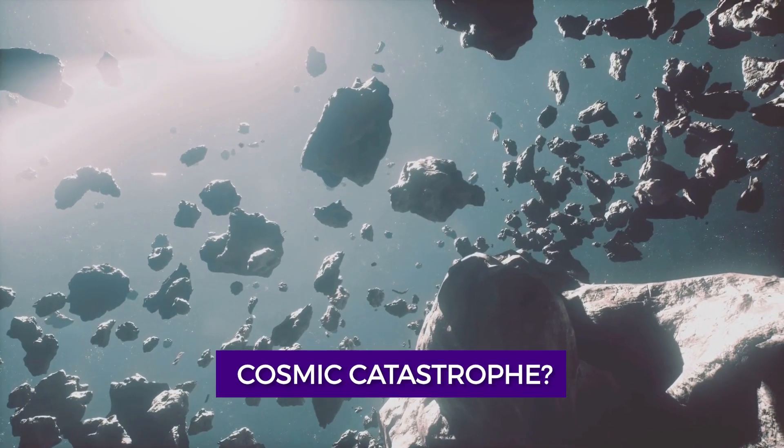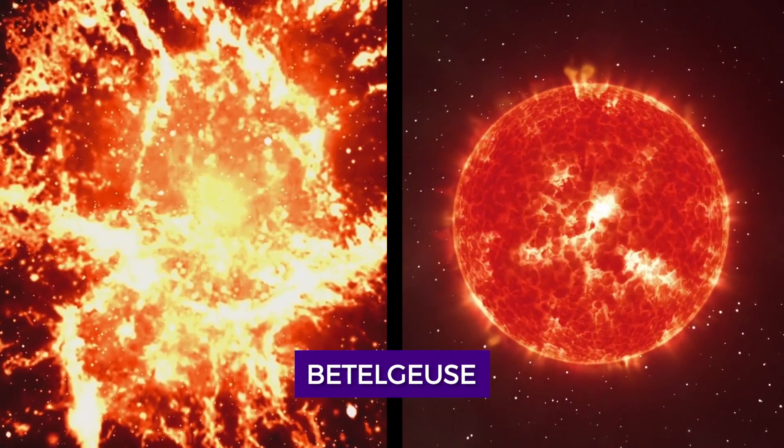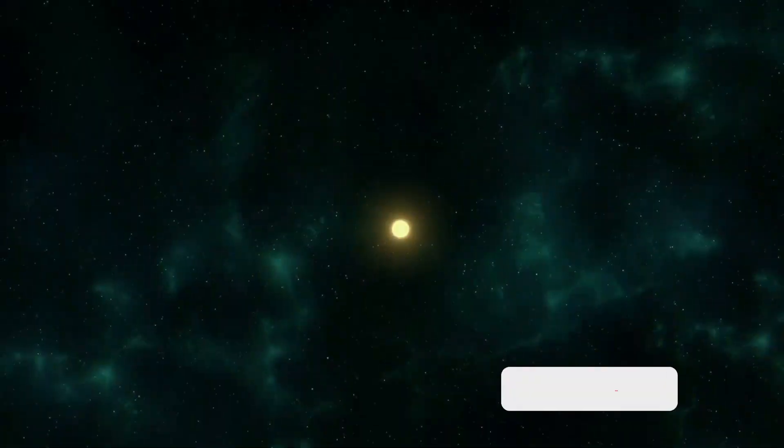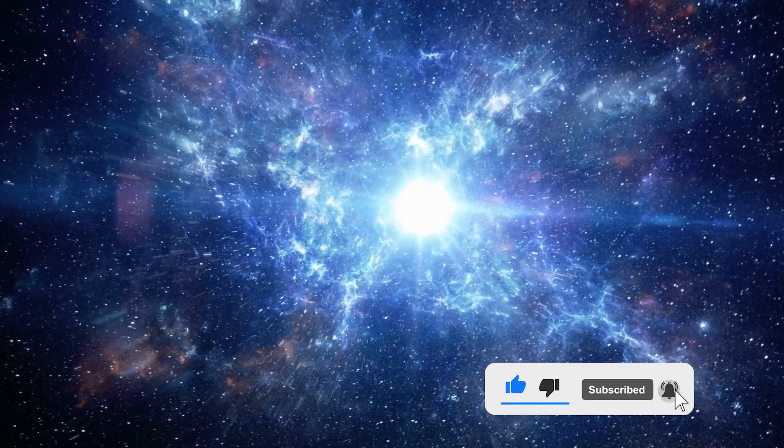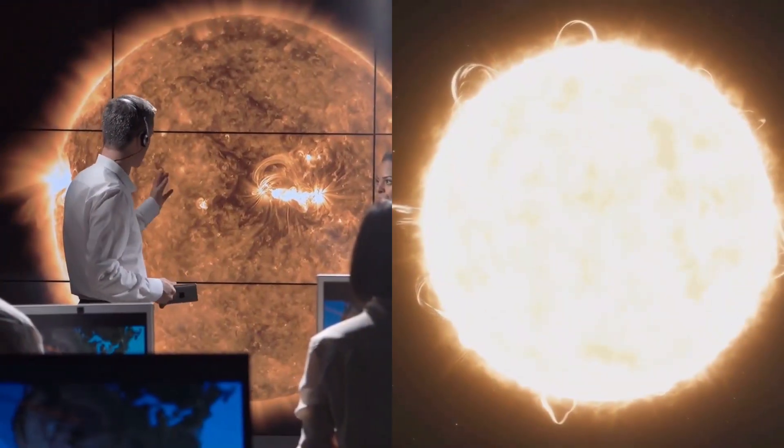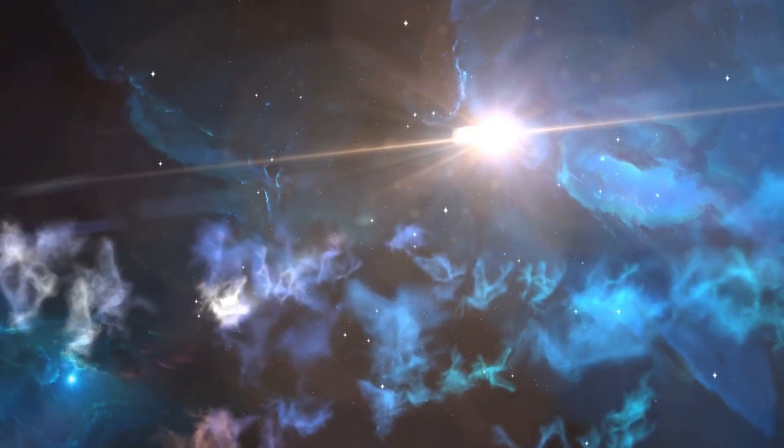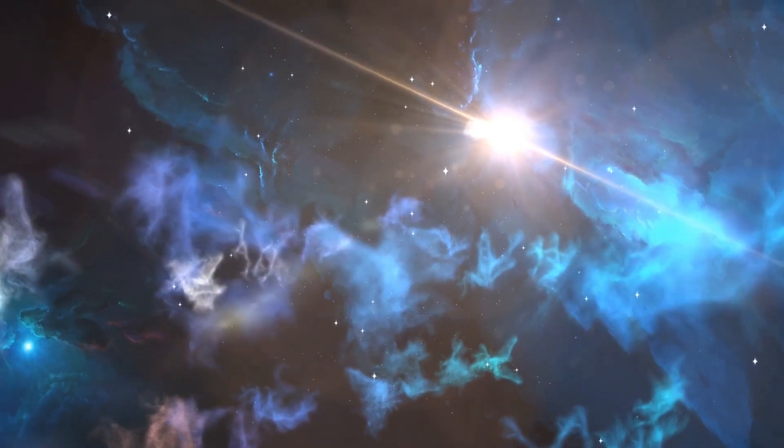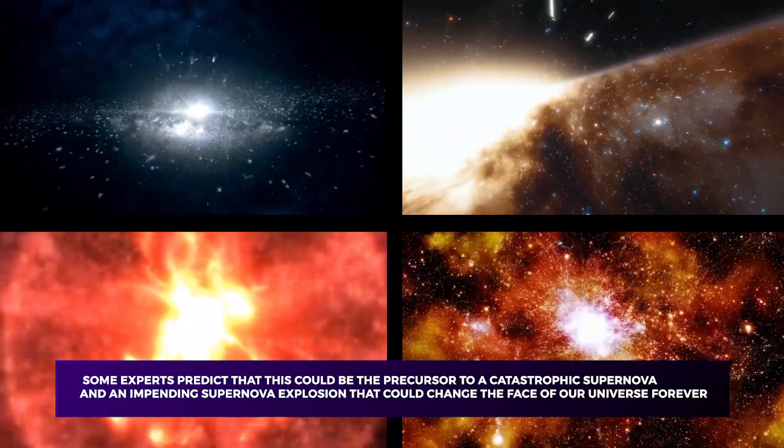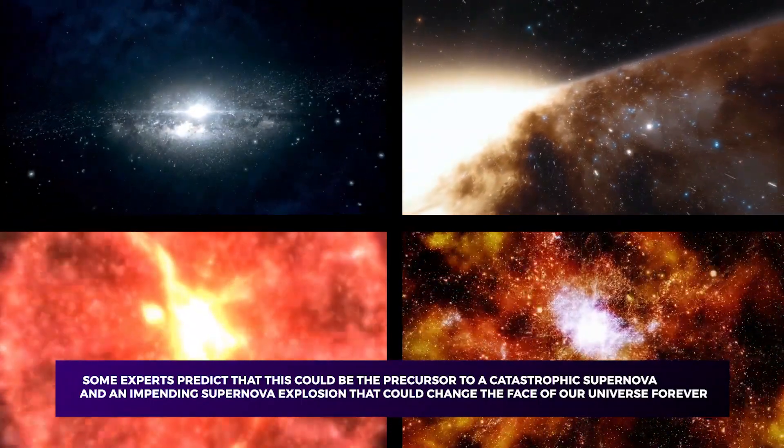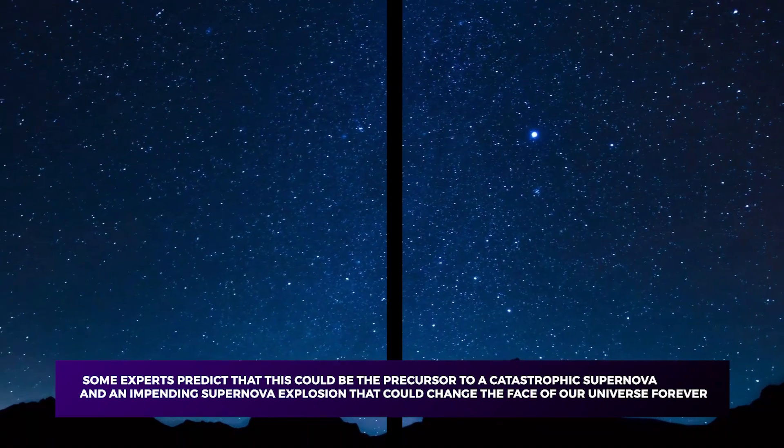Are we on the brink of a cosmic catastrophe? The red supergiant star Betelgeuse displays ominous signs of an imminent explosion, a stunning development that has sent shockwaves through the scientific community. Astronomers have been on high alert as they observe Betelgeuse exhibiting unusual behavior, dimming the star's brightness and fluctuating erratically. Some experts predict that this could be the precursor to a catastrophic supernova, an impending explosion that could change the face of our universe forever.